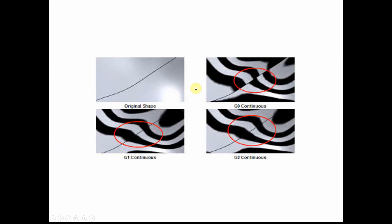More reflections with what I call a zebra stripe analysis. The quality here isn't great, but you've got the original shape, you've got G0 across here — notice how the zebra stripes are not lining up with each other. I'll show you how to do this in CATIA to do the zebra stripe analysis.